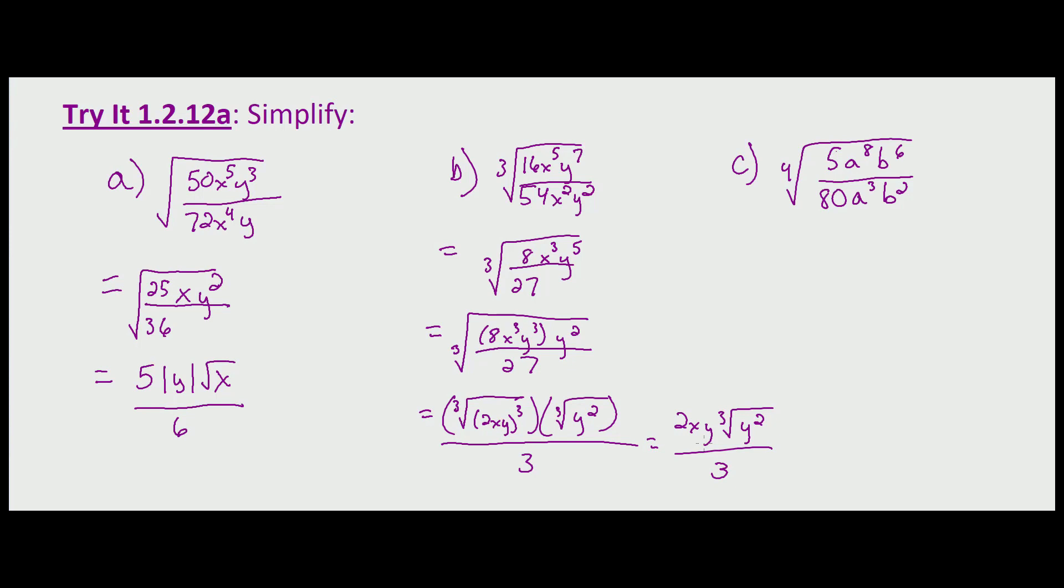Part c, we're looking at a fourth root. Again, let's simplify what we can under the radical first. 5 and 80, well 5 is a factor of 80, so this is just the fourth root of: 5 divided by 5 is 1, a to the 8 minus 3 is a to the fifth, b to the 6 over b squared is b to the 6 minus 2, which is b to the fourth, and then 80 divided by 5 leaves us with 16. So that equals the fourth root of a to the fourth, b to the fourth, times a—we're looking for perfect fourth powers—and that's all over the fourth root of 16, which is 2 to the fourth.